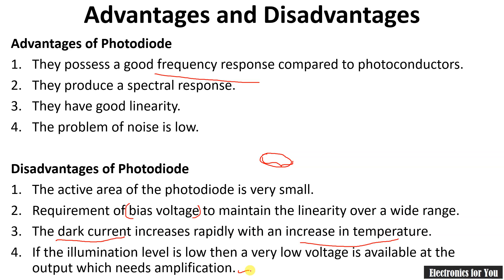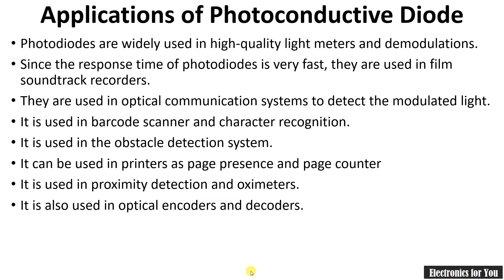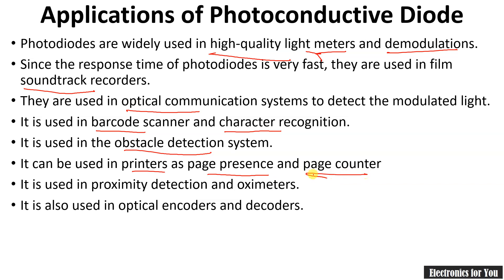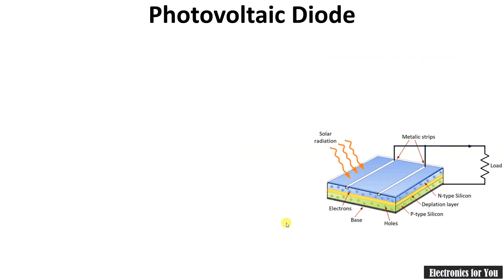The applications of photoconductive diodes include: high-quality light meters, demodulation, soundtrack recorders, optical communication, barcode scanners and character recognition, obstacle detection systems, printers as page-presence sensors and page counters, proximity detection, oximeters, and optical encoders and decoders.